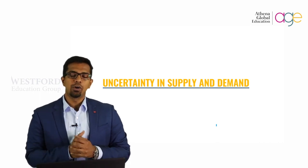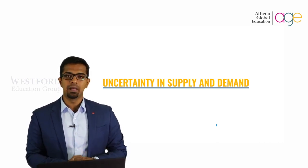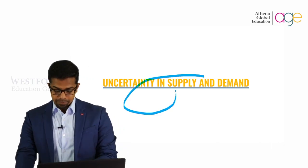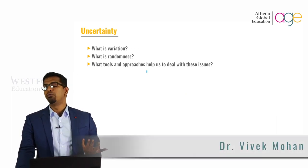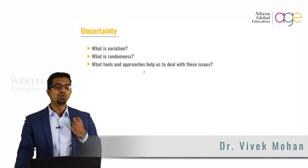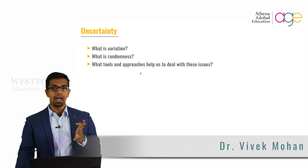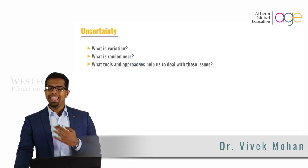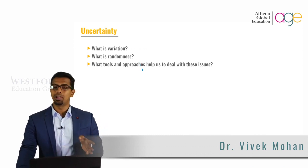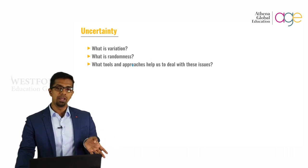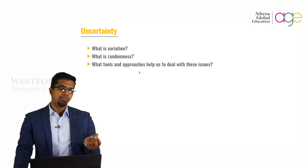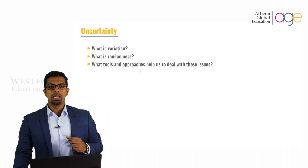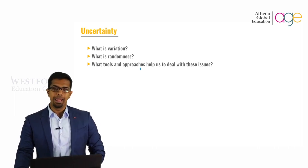Welcome to this lecture on Uncertainty in Supply and Demand. When you talk about uncertainty, you talk about a lot of different things. The two main aspects that come to mind are supply and demand. If you've figured out everything with regard to supply and demand, then your business would be the most successful business out there. But that's not true, because nobody can figure out everything about supply and demand. There is always an element of uncertainty in terms of supply and demand.